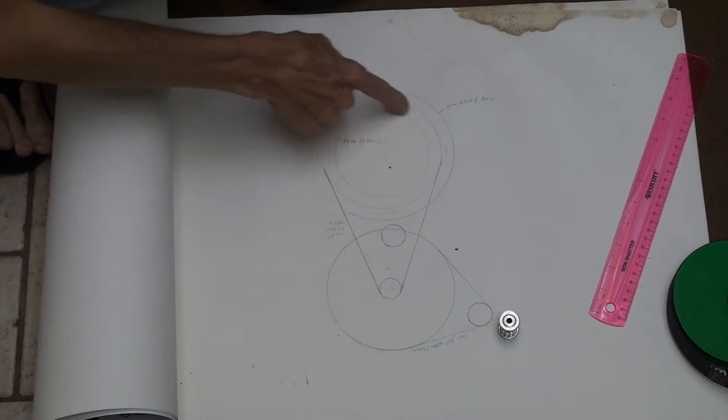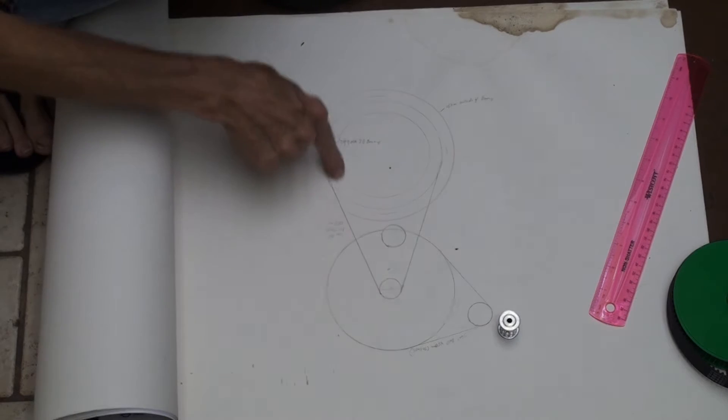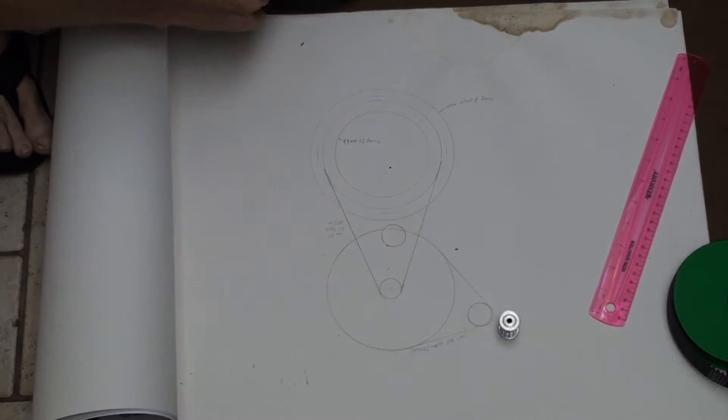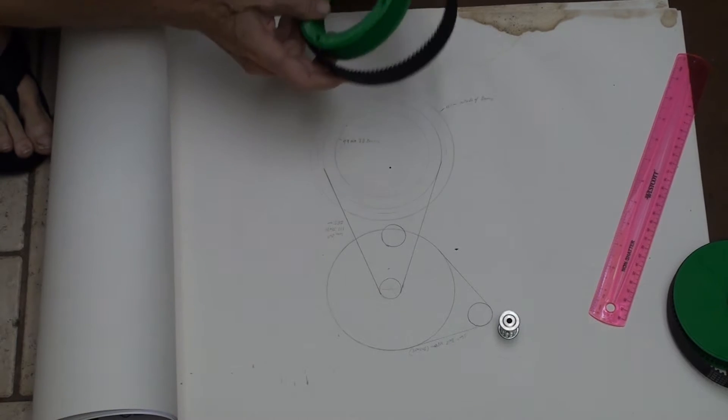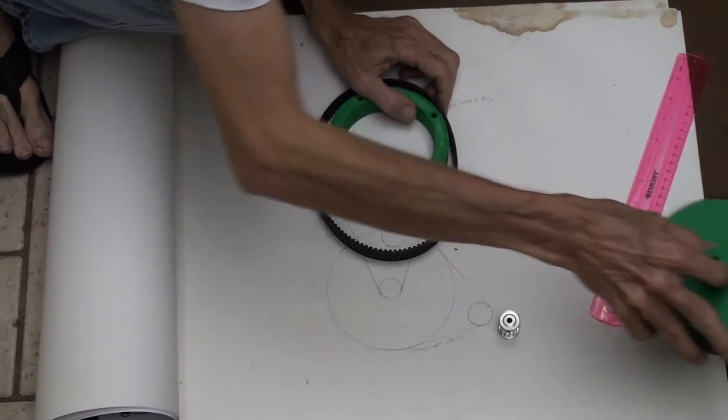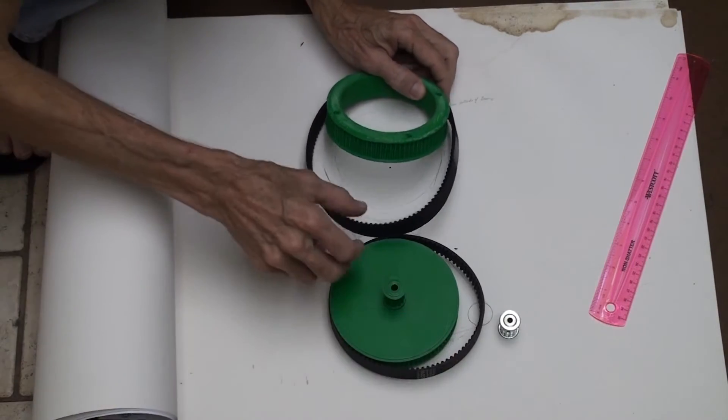This is how the drive will go. It'll be identical for both pan and tilt. It's a two-stage belt gear reduction. This is the output gear. And the entire center of that will be open for wires and things to pass through.